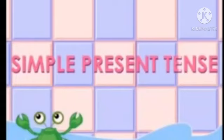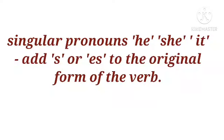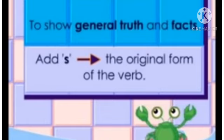We are going to learn simple present tense. The simple present tense is used for general truths, and also for actions which are done often, usually, sometimes or every day. With singular pronouns he, she and it, we add S or ES to the original form of the verb. If the pronouns are plural — like I, you, we and they — we use the original form of the verb itself.